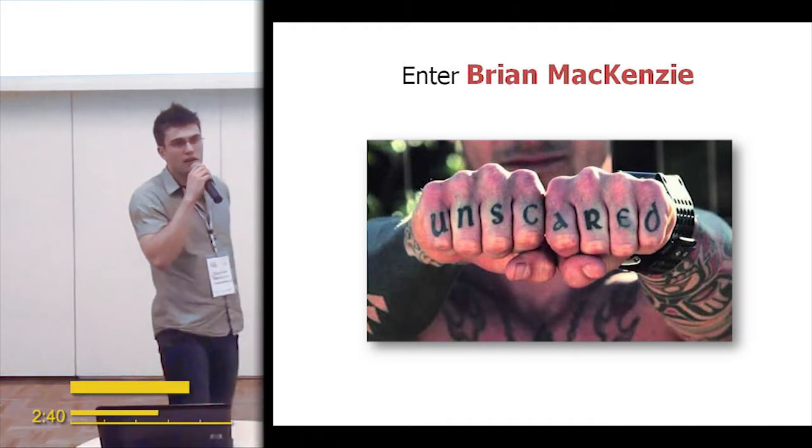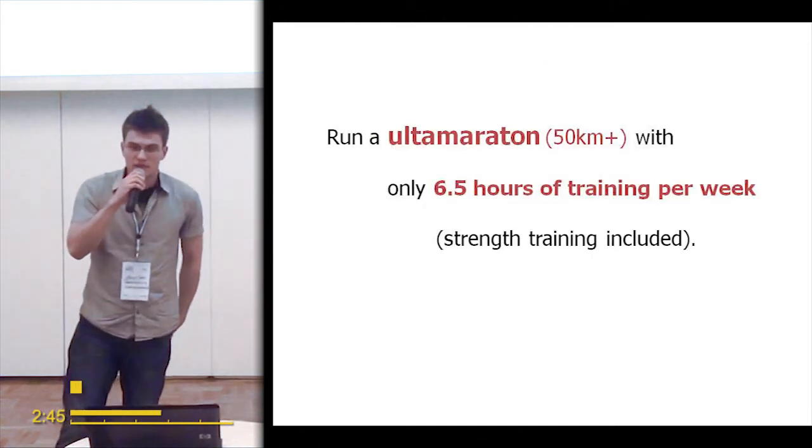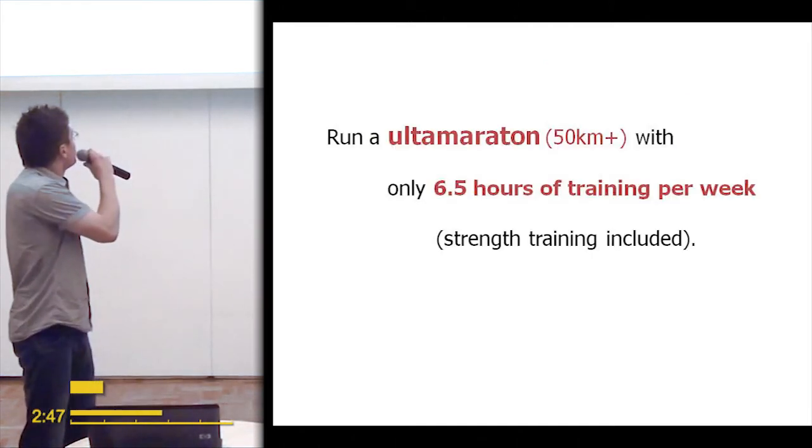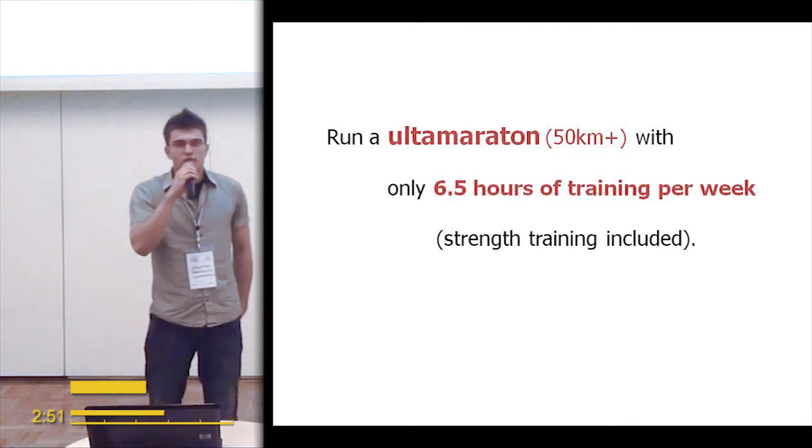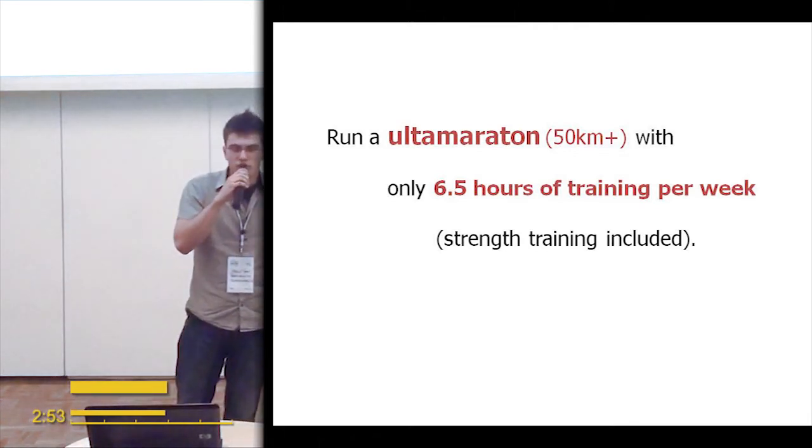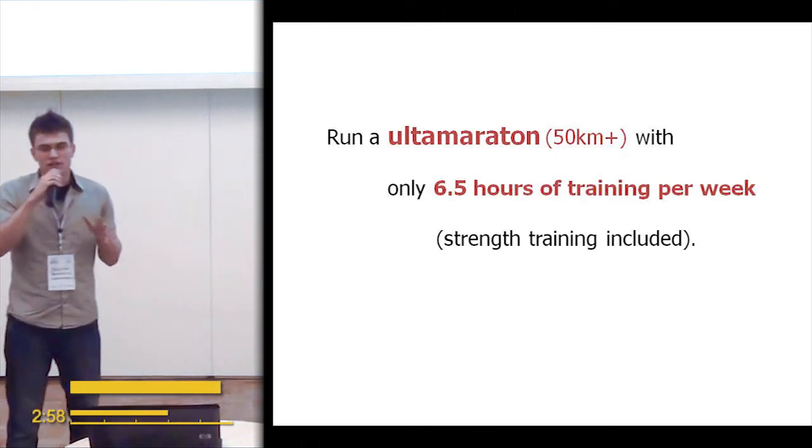So here comes Brian McKenzie, guy who trains six and a half hours a week and runs ultra marathons that have 100 miles. He found out that he can train like 400 meter sprints with two minutes in between and gain enough endurance and speed to run for the next 20 hours on ultra marathon.